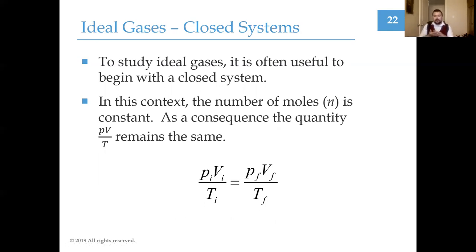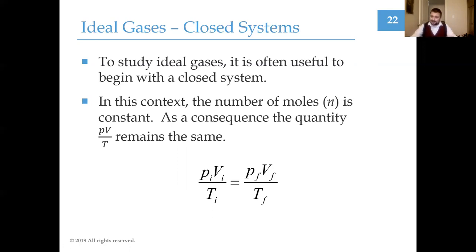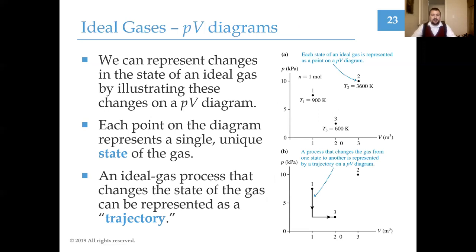Most of the time we'll have an ideal gas in a closed system and make changes to it — do work on it or allow it to exchange heat. The gas will typically stay the same with the same number of moles. If you've taken chemistry, you've seen that for the same gas, the quantity PV/T remains the same as the gas evolves from one state to the next. This helps as we start looking at PV diagrams, which are how we like to view changing the state variables.